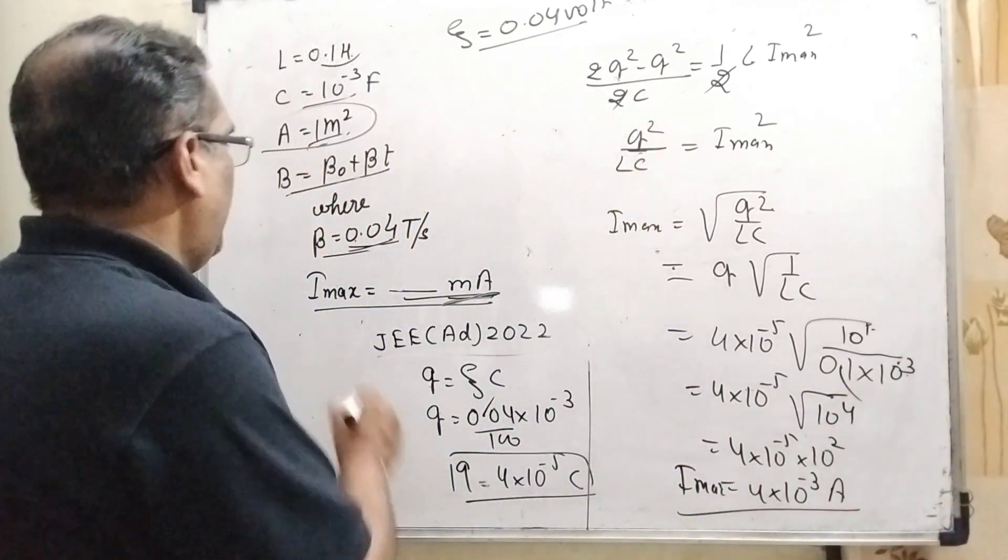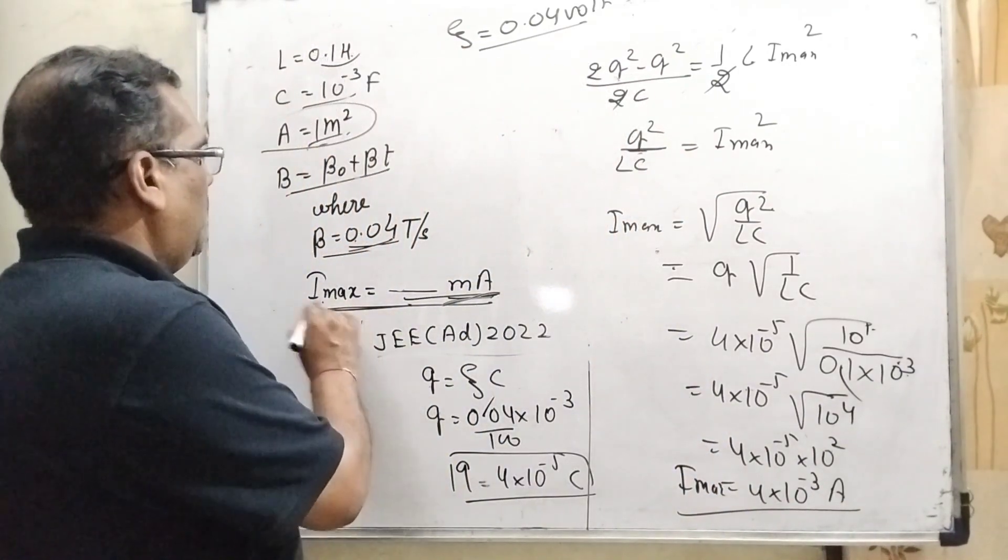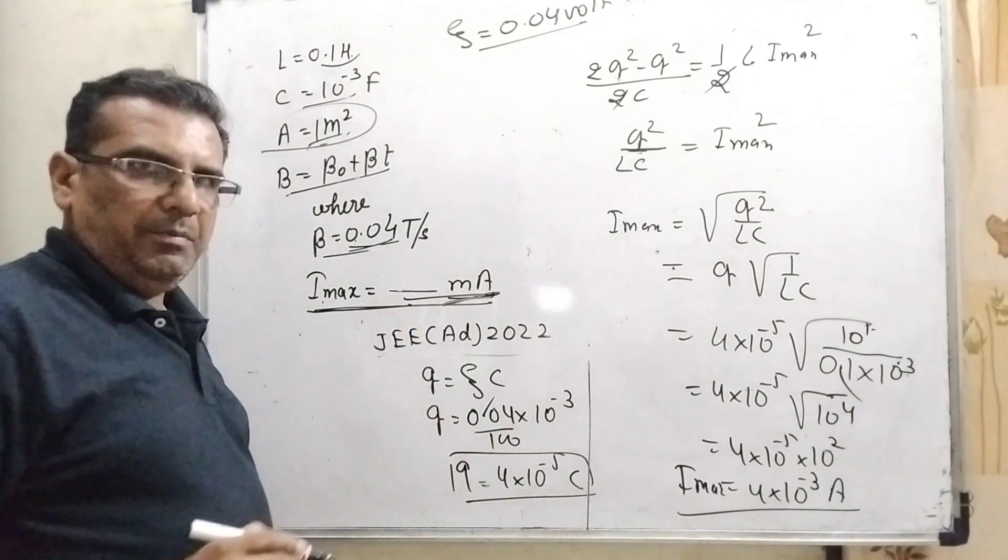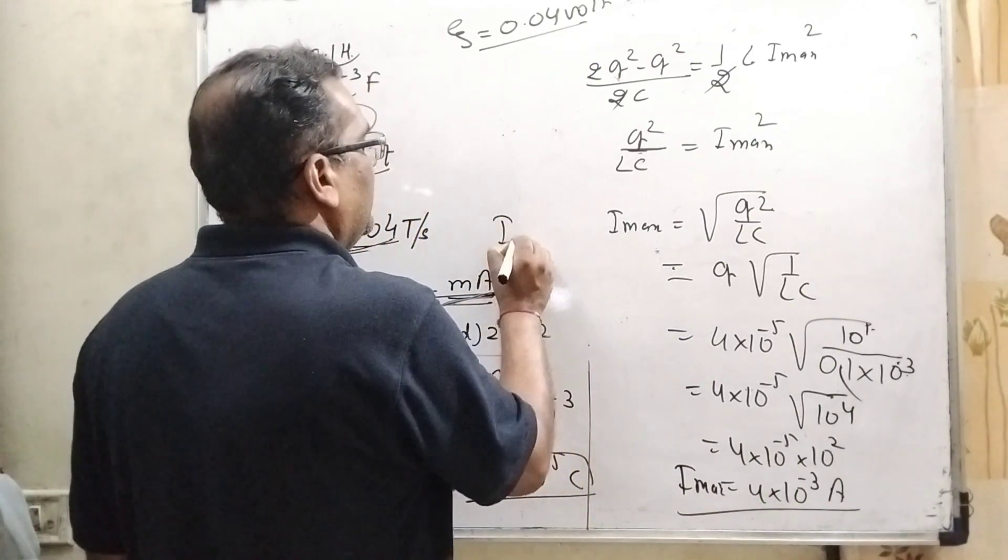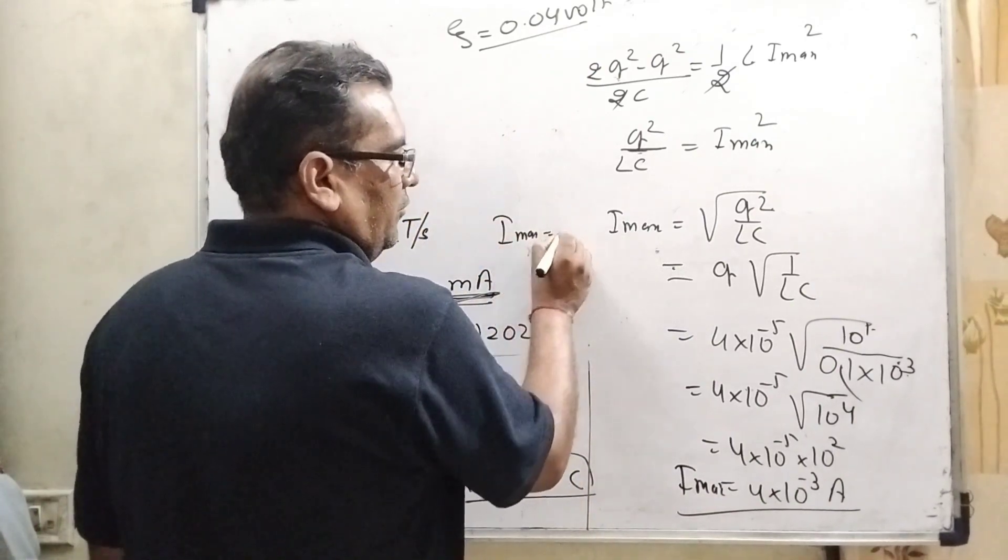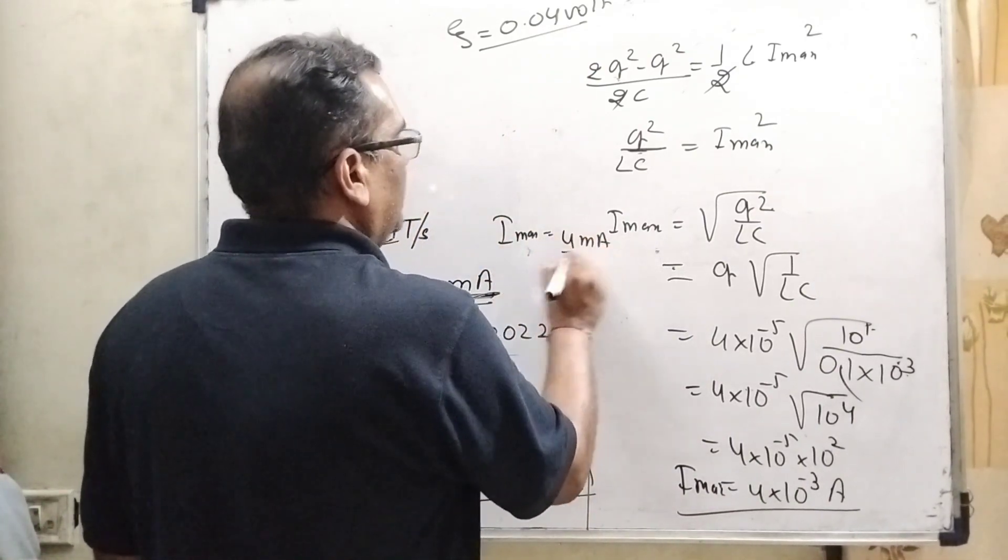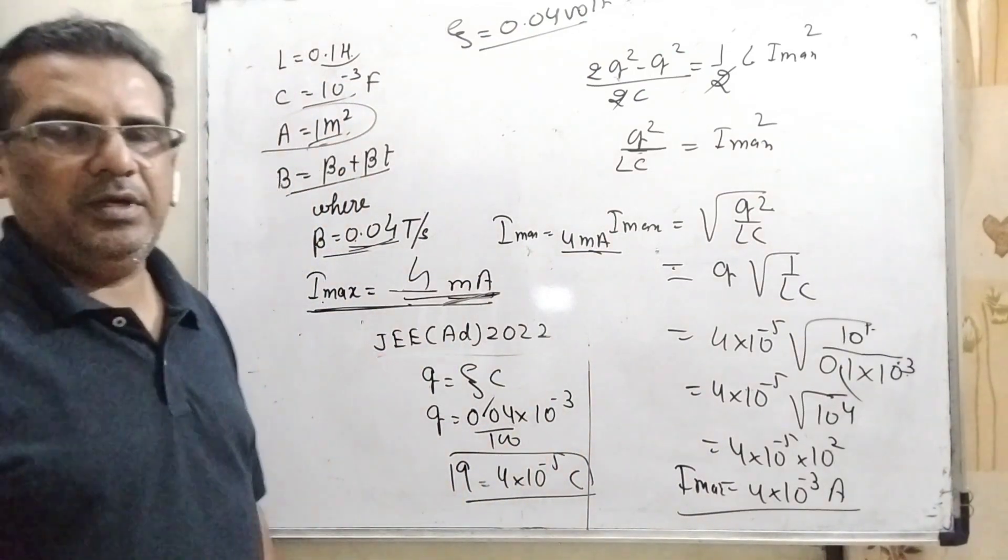But we have to ask that I maximum find out in milliampere. So therefore, 4 into 10 raised to power minus 3 ampere can be written as 4 milliampere. So the correct answer is 4 milliampere.